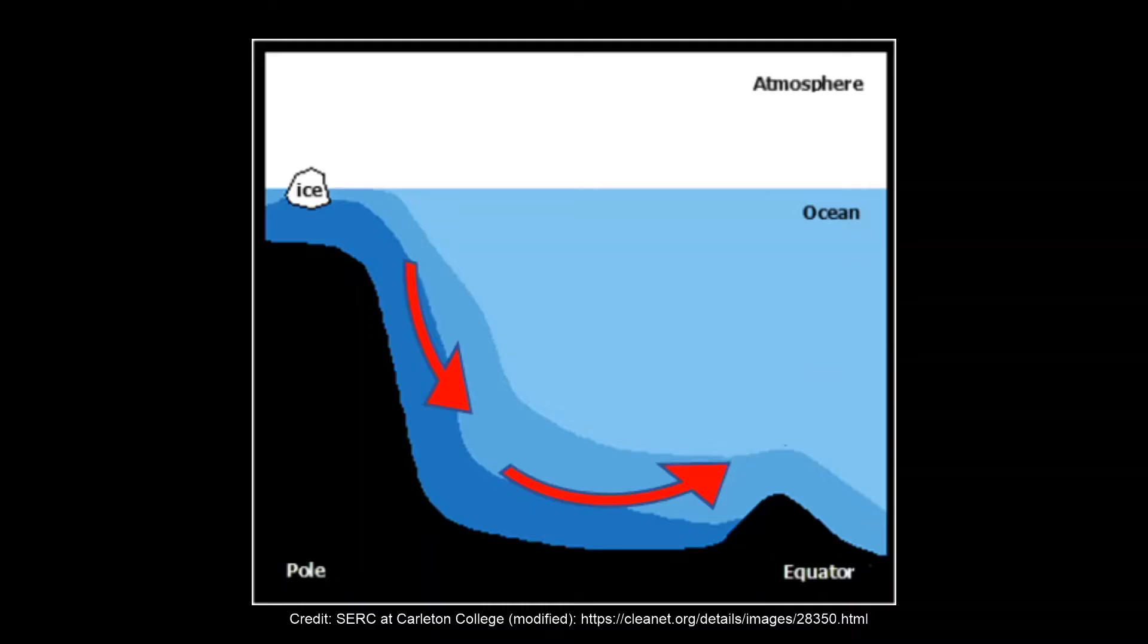These deep ocean currents are driven by differences in the water's density, which is controlled by temperature (thermo) and the salinity (haline). So this process is known as thermohaline circulation.